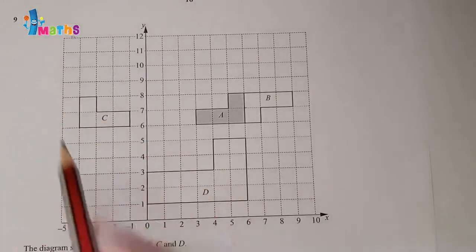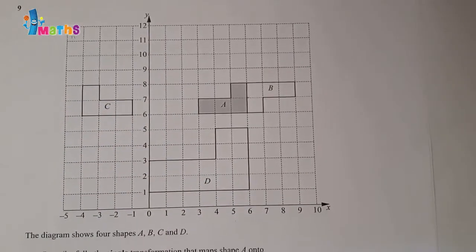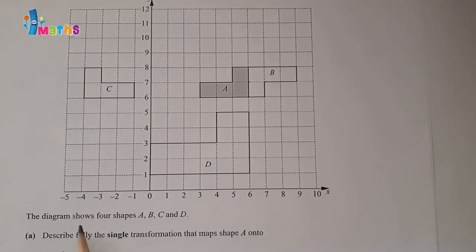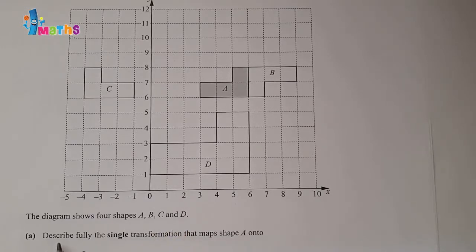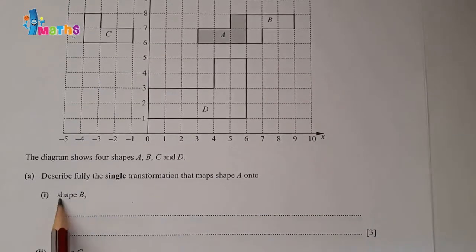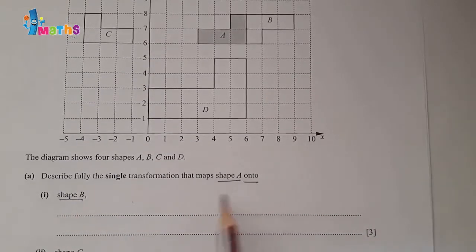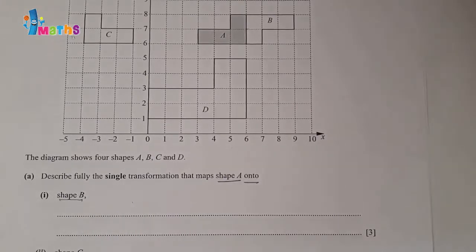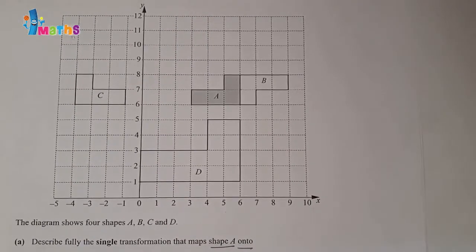Question number 9 — this is a transformation question. The diagram shows four shapes A, B, C, D. Part A: describe fully the single transformation that maps shape A onto shape B. So first part is shape A onto shape B. We will check shape A onto shape B; we will take help of the tracing paper.